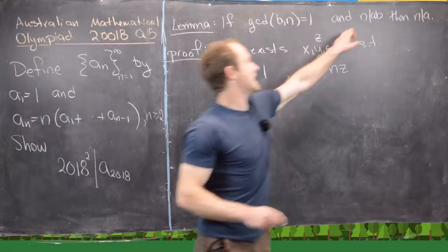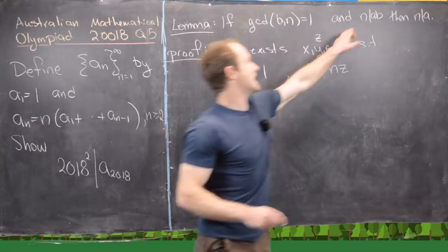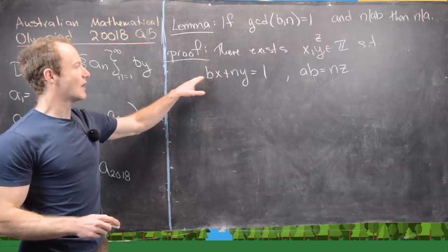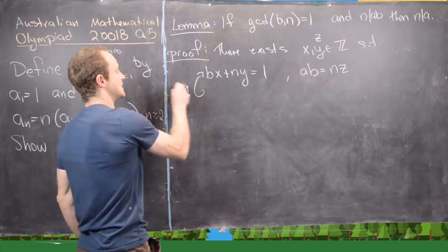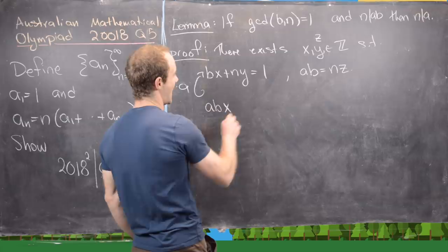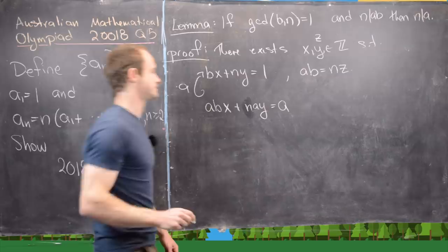So this GCD being one gives us this type of equation and then n dividing ab gives us this type of equation. And now what we want to do here is multiply this entire equation by a so we'll multiply that entire equation by a and notice that's going to give us abx plus nay equals a.